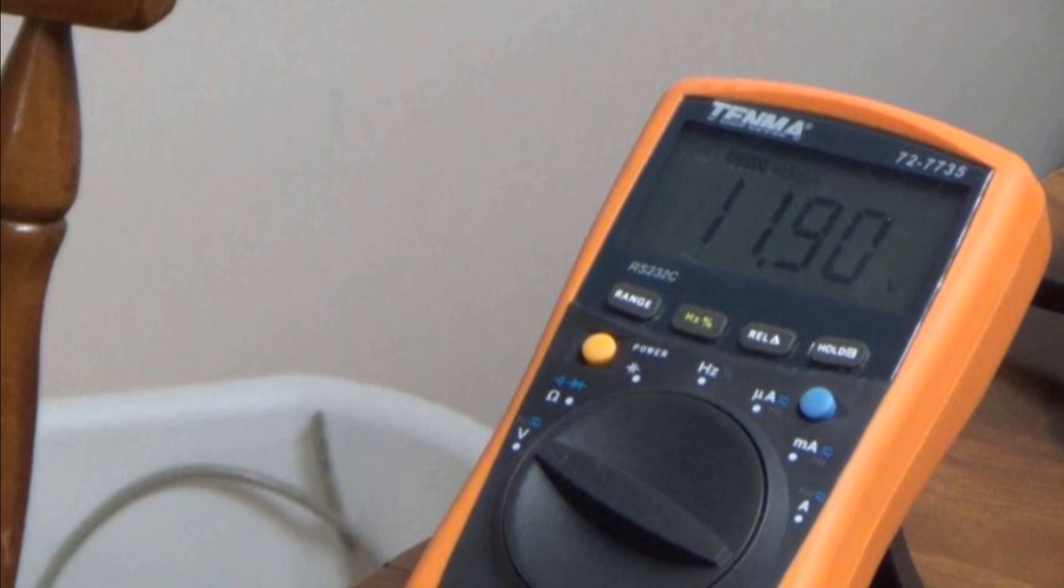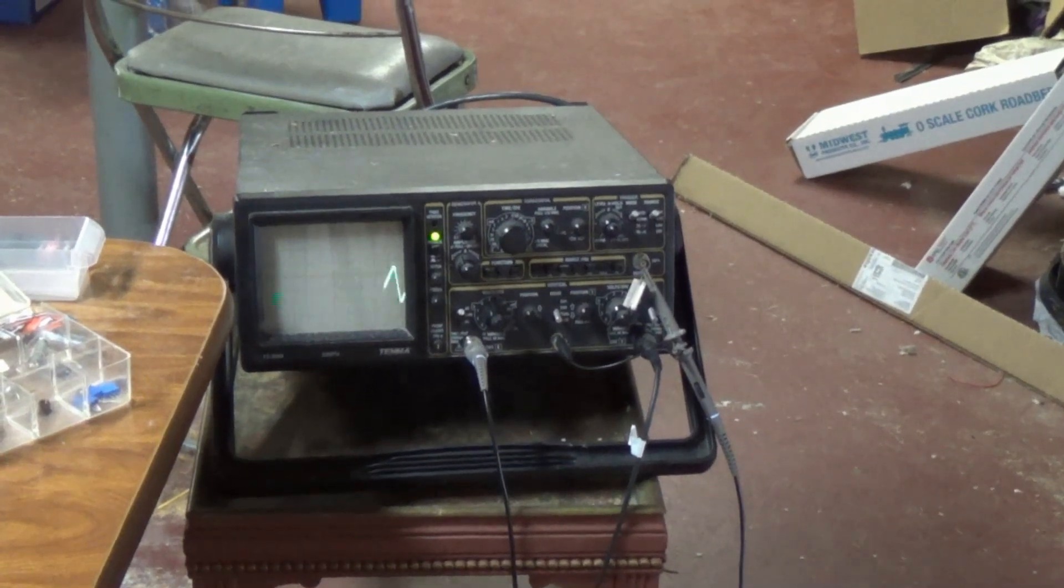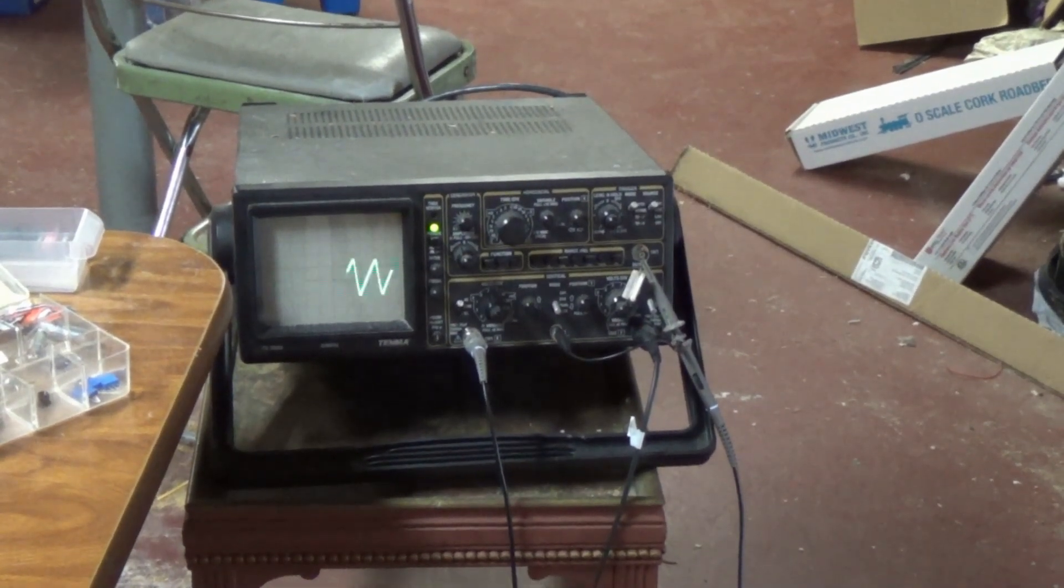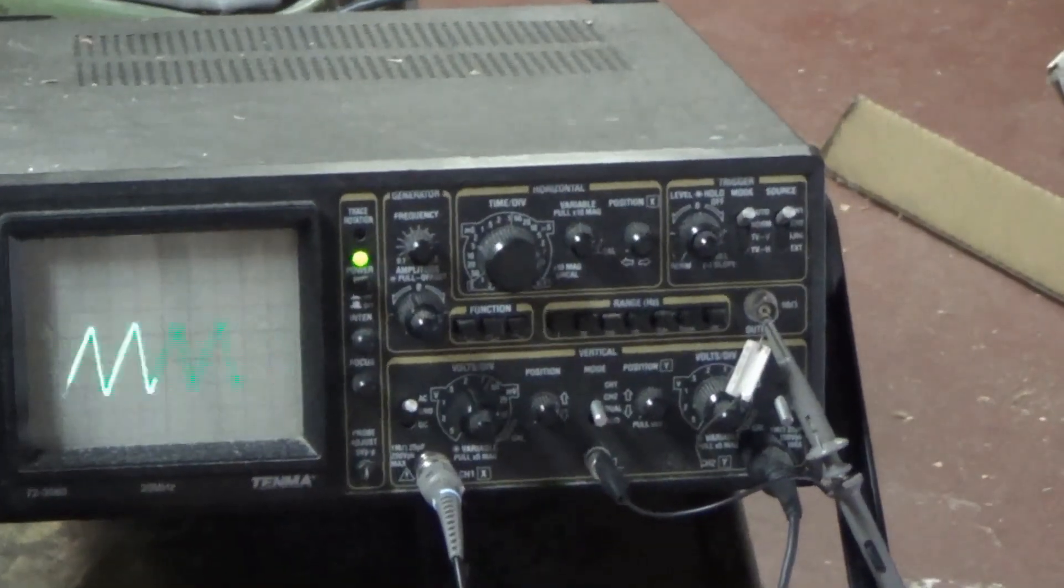You can see the 11.9-volt reading on my digital multimeter. I do my experiments on Radio Shack solderless breadboard. I also make use of an oscilloscope to look at waveforms. I test my circuits on the workbench before deploying them on my layout.